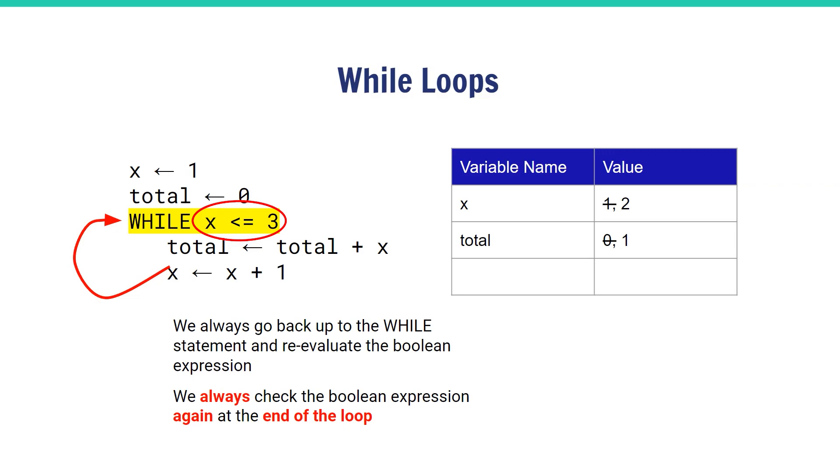It gets checked again at the end of all the indented lines of code. We're going to check whether x is less than or equal to three, and we find that x has changed. It was originally one, but because of the x plus one goes to x, x has now changed to two.